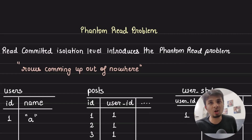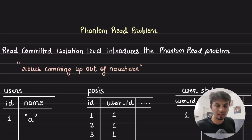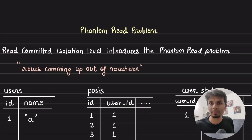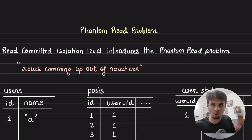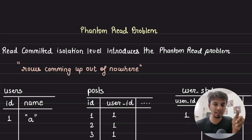Phantom read is a very common problem when it comes to database transactions. It especially occurs when your transaction isolation level is set to read committed. I have a very detailed video on the transaction isolation levels where I have explained all four of them with examples. Please refer to that when you want to dive deep into all four of them. Here, I'll give you a brief about what read committed isolation level is and what the phantom read problem is.